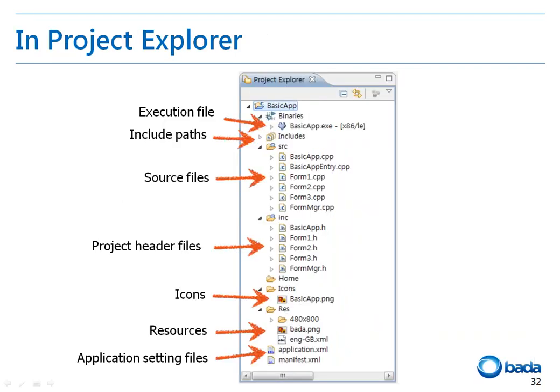Now let's take a look at the Project Explorer in detail. The Project Explorer lists project components. From the top, the binary is the executable file for the phone or simulator. Next, we have the include path, and then the source files. Then the header files are listed, and the application icons are also listed. There is also the group res, which is a set of resources necessary for the application. Its contents will be copied to the phone when the application is installed. Finally, you will find the application .xml and the manifest .xml files, which are the application setting files.